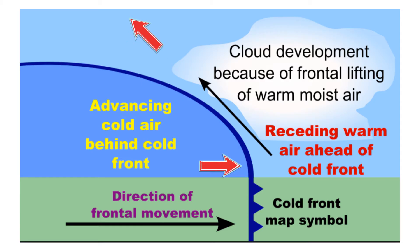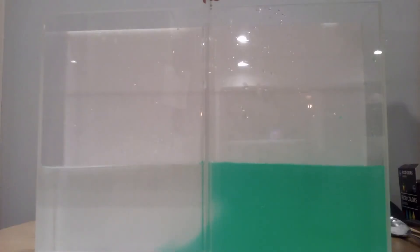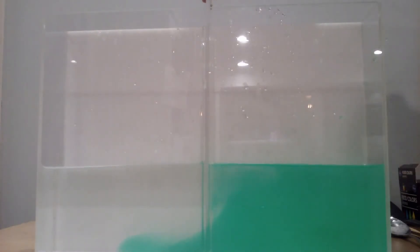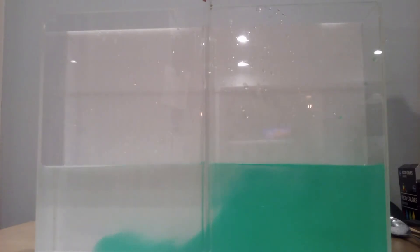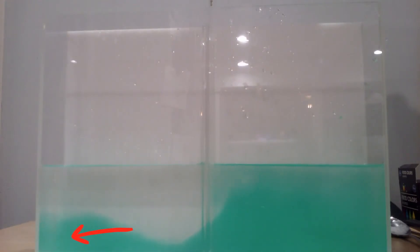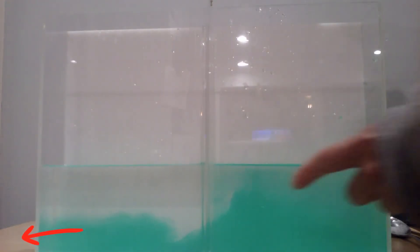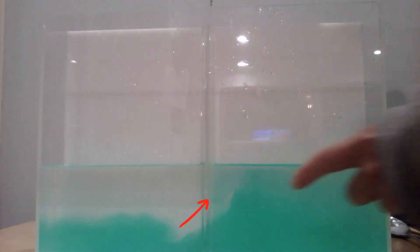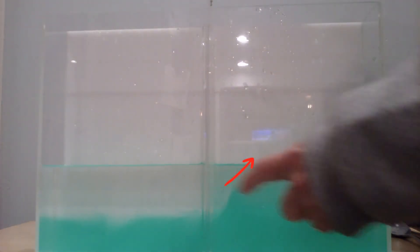If you watch this demonstration, the cold air would be represented by the green water. Notice that it moves under the warm air, which is the clear water. And as it does, the warm water moves upward. You can kind of see what the front would look like.